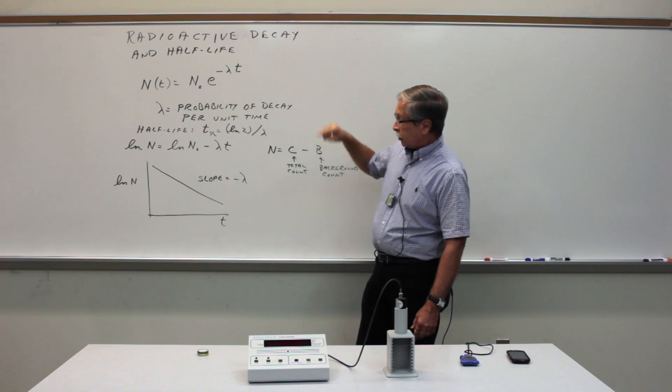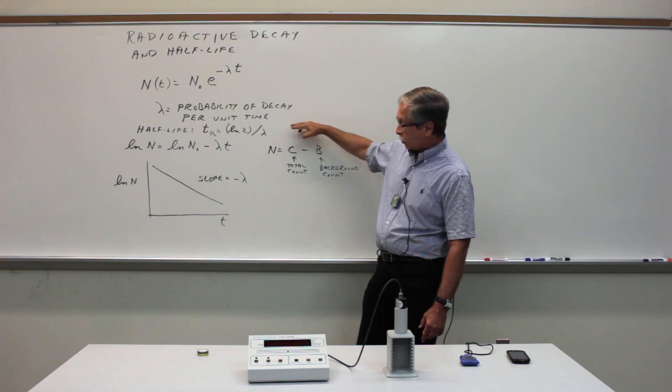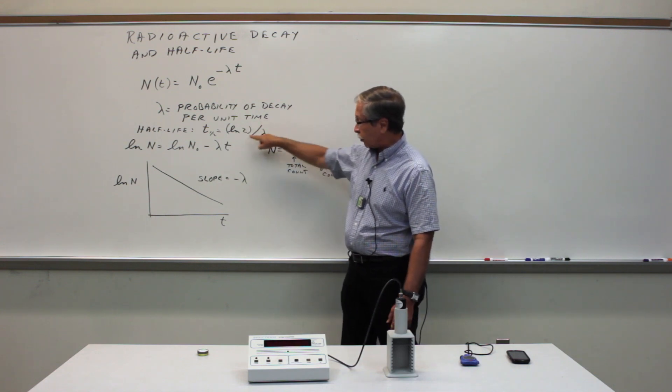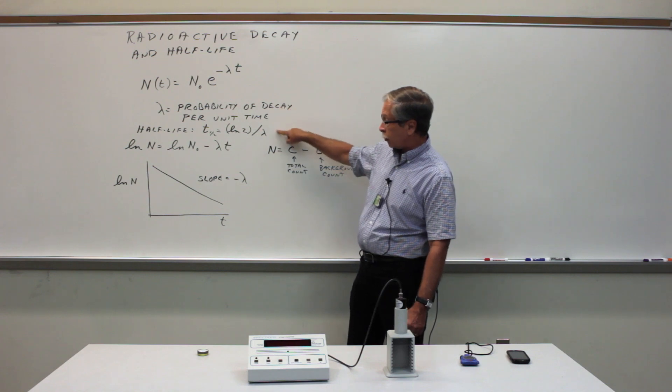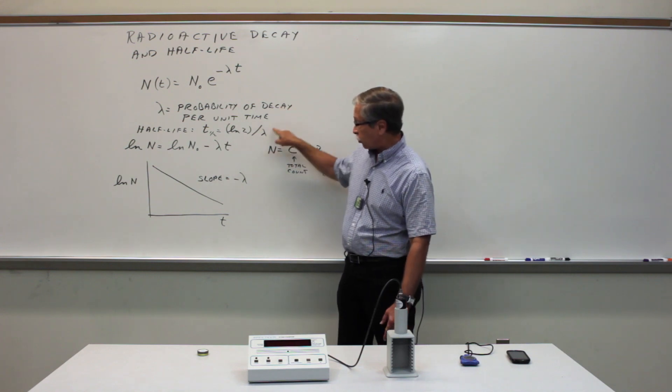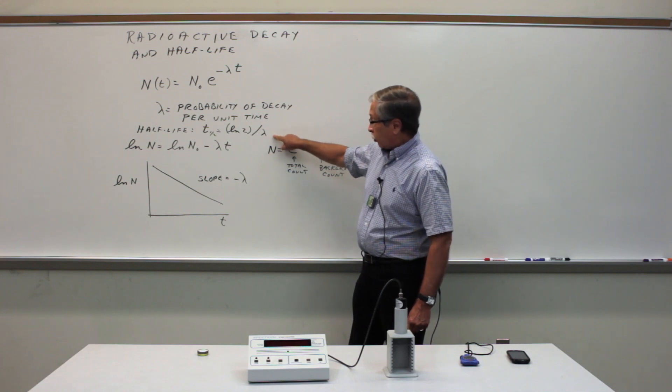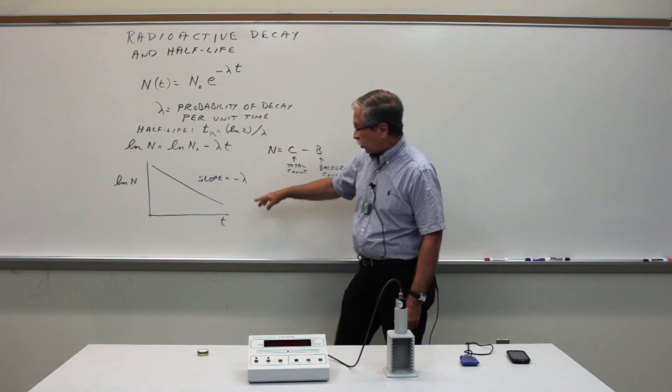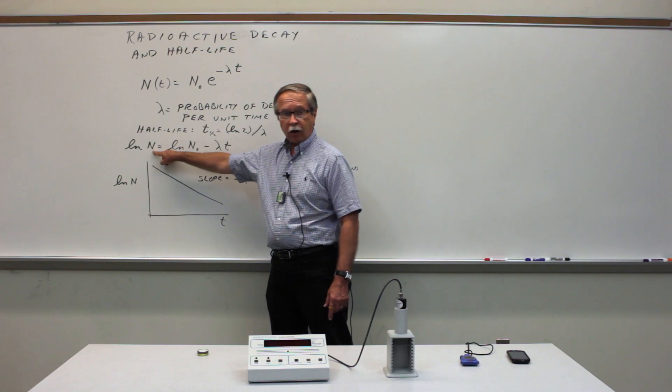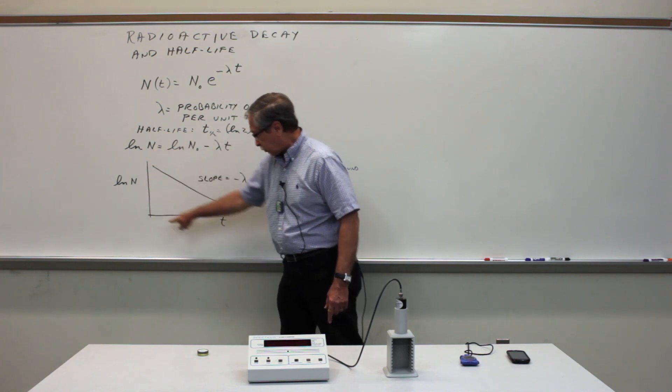What we'll be determining ultimately is the half-life of the material which is related to the decay probability. It's just the natural log of 2 divided by the decay probability and we get this information from the slope of a plot of the natural log of the number of counts as a function of time.